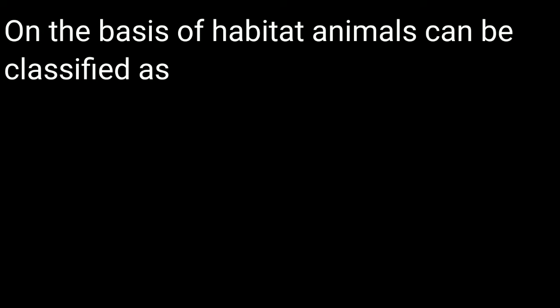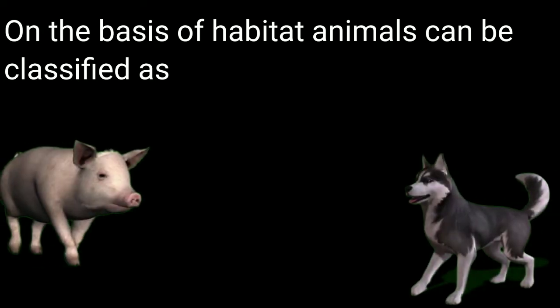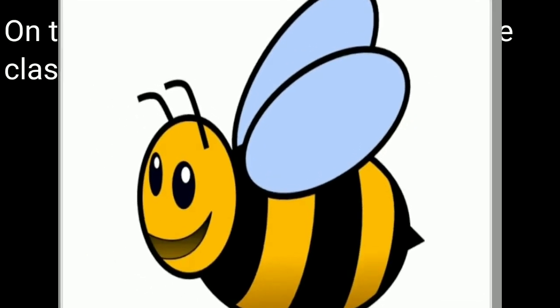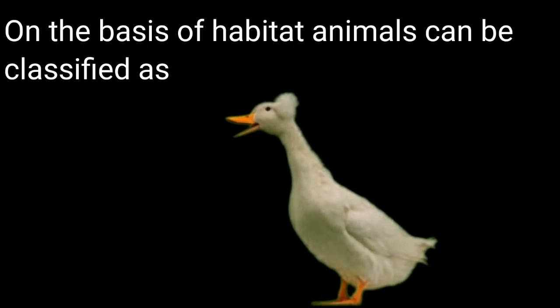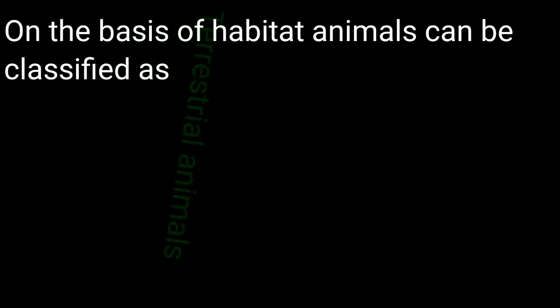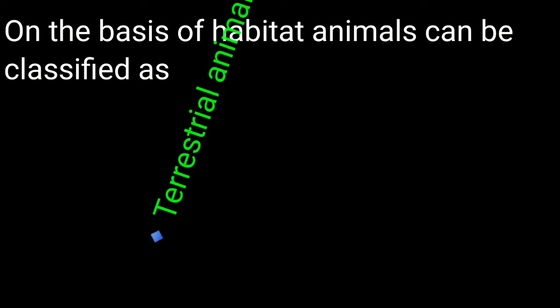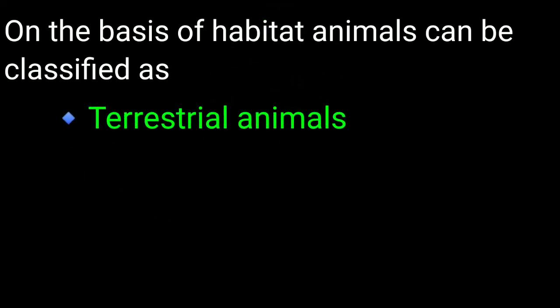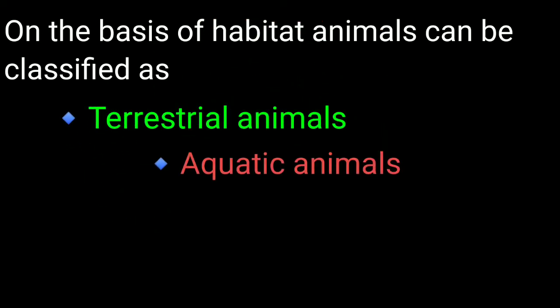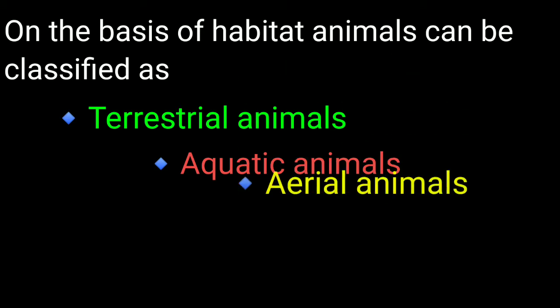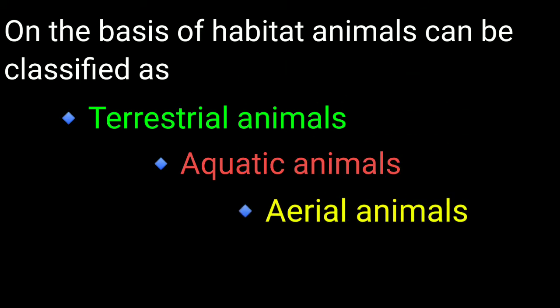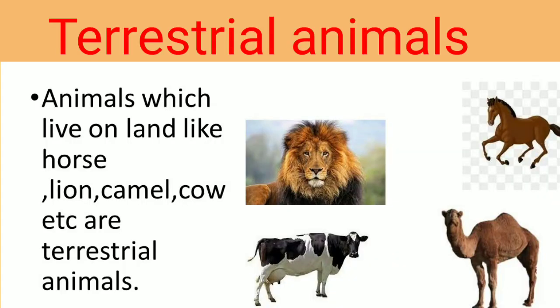Jaisi, kuch animals zameen pe rehte hain, kuch hawa mein rehte hain, aur kuch paani mein rehte hain. So, on the basis of habitat, animals may be classified as terrestrial animals, aquatic animals, and aerial animals.